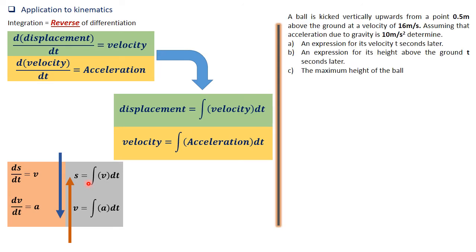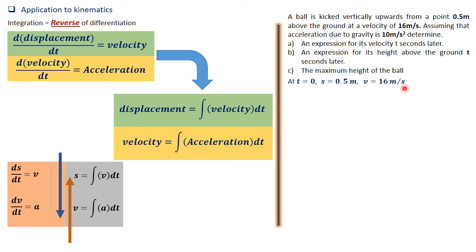Let's see how this plays out in actual examples. A ball is kicked vertically upwards from a point 0.5 meters above the ground at a velocity of 16 meters per second. Assuming acceleration due to gravity is 10 meters per second squared, determine: an expression for its velocity t seconds later, an expression for the height above the ground t seconds later, and the maximum height. At t equals zero, displacement s is 0.5 meters and velocity is 16 meters per second.